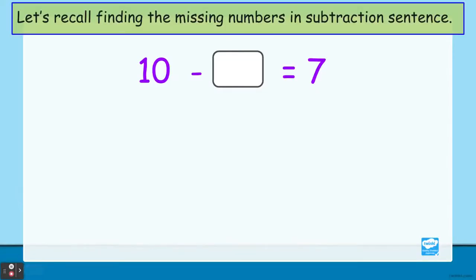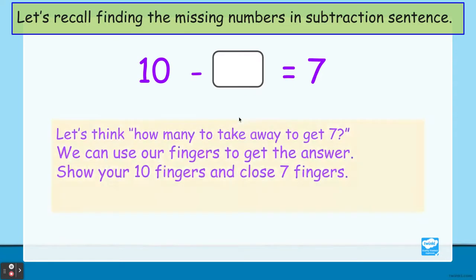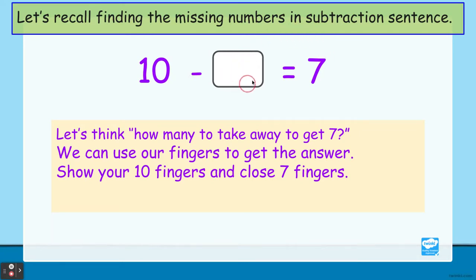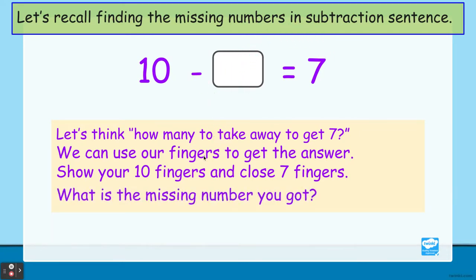Let's recall finding the missing numbers in subtraction sentences. Take a look at this: 10 take away blank equals 7. What is the missing number? Think about how many to take away to get 7. Show your 10 fingers and close 7 fingers. The missing number is 3.